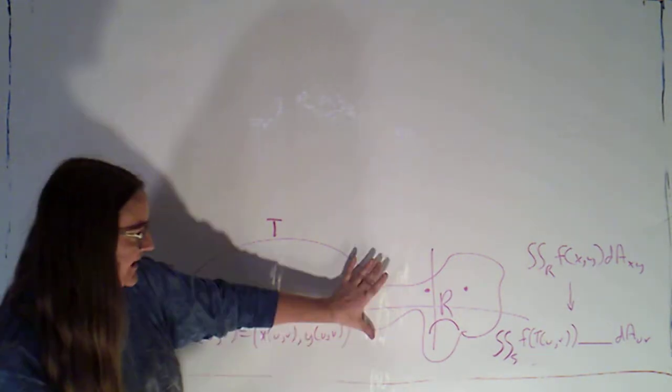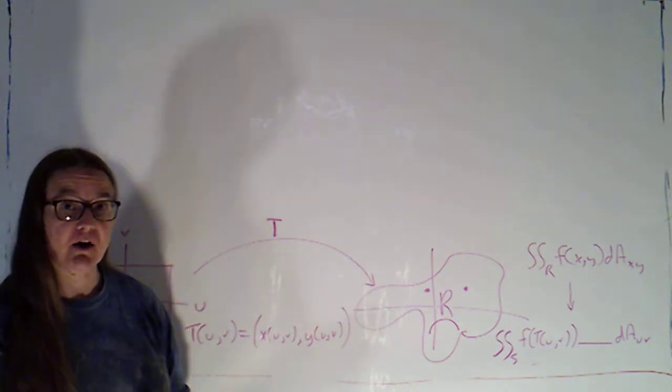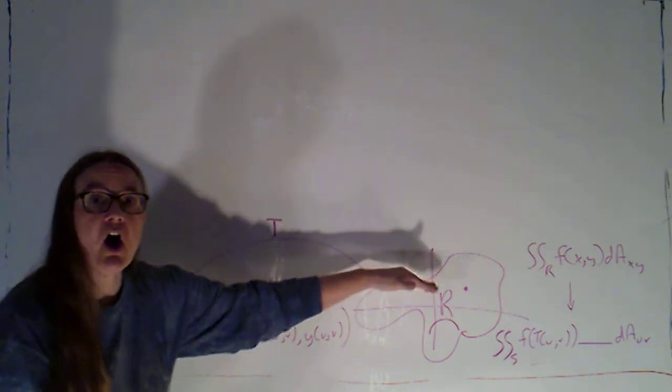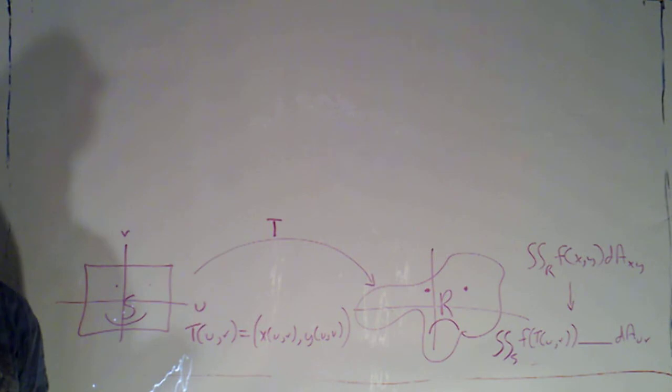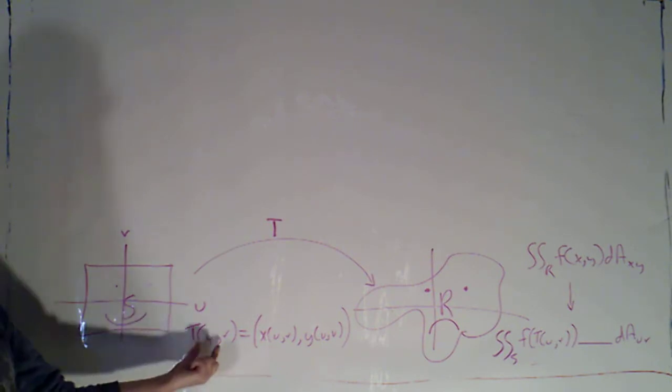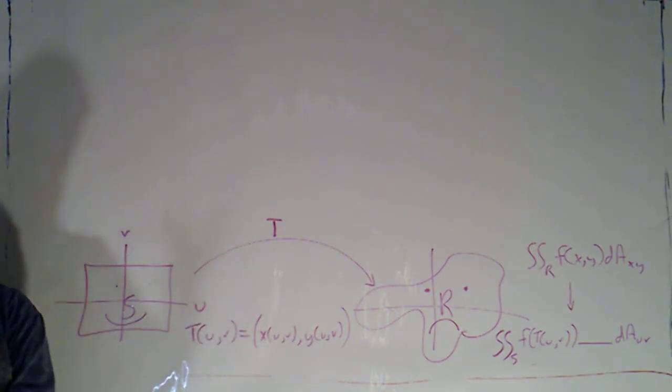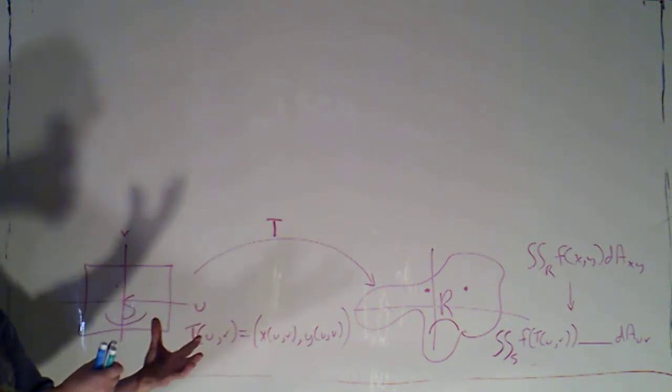I've illustrated it as we don't like the region R. So we're hoping that there's some nice region that we're calling S over here in the UV plane that we can map to R via some transformation T. That's going to be a function whose input is U and V, and whose output is X and Y. So a two-dimensional input, two-dimensional output.